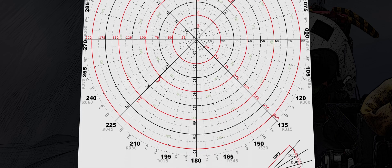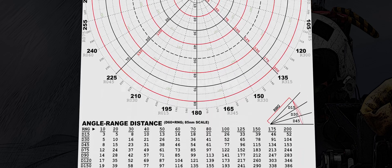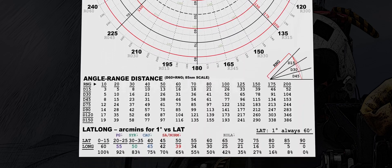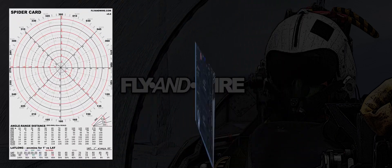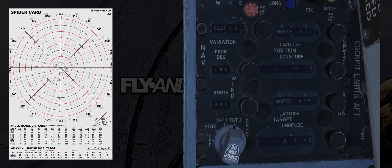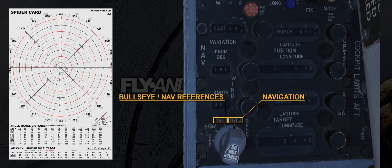A topic discussed on this channel circa one year ago. The recent video about leapfrogging showed how Target 2 can be used for navigation. This leaves Target 1 free for other purposes — in our case, the bullseye.